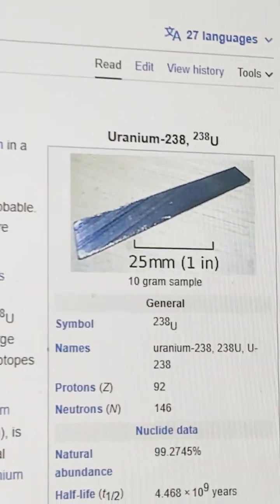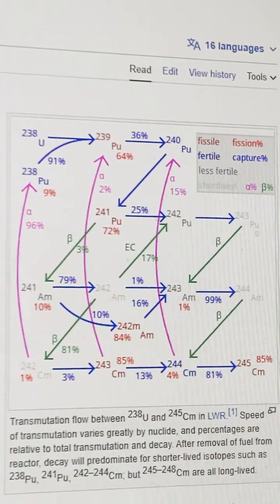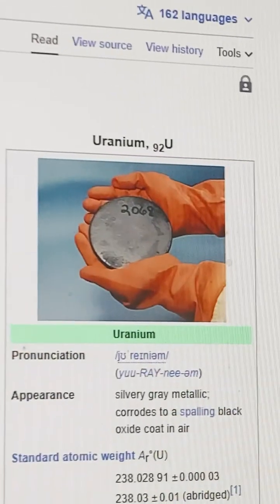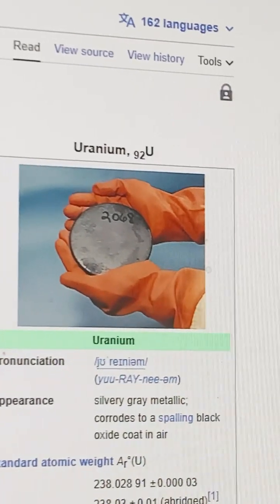Uranium-238 is not fissile, but it is fertile, meaning it can be transmitted to fissile plutonium-239. Many contemporary uses of uranium exploit its unique nuclear properties.